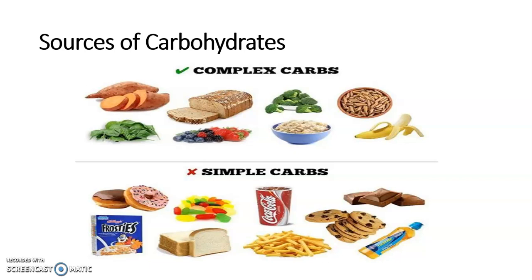Carbohydrate digestion starts inside our mouth and continues through the digestive tract, ending in the small intestine where carbs are broken down into simple sugars. They are then absorbed by the blood and circulated to the cells that need energy to carry out their activity.